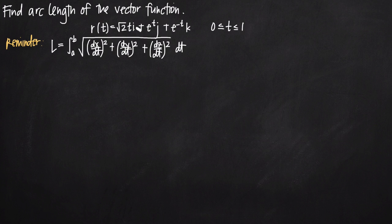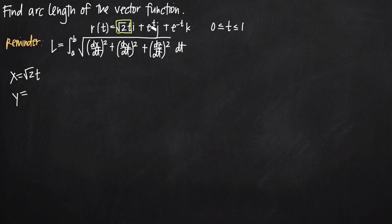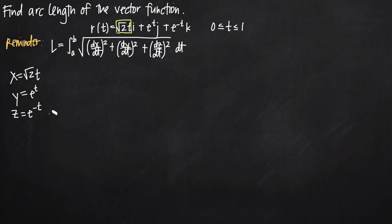We take the coefficients on i, j, and k and turn them into parametric equations. So x is equal to the square root of 2 times t — the coefficient on i. Then y is equal to e to the t — the coefficient on j. And z is equal to e to the negative t — the coefficient on k. Now we have a set of parametric equations.